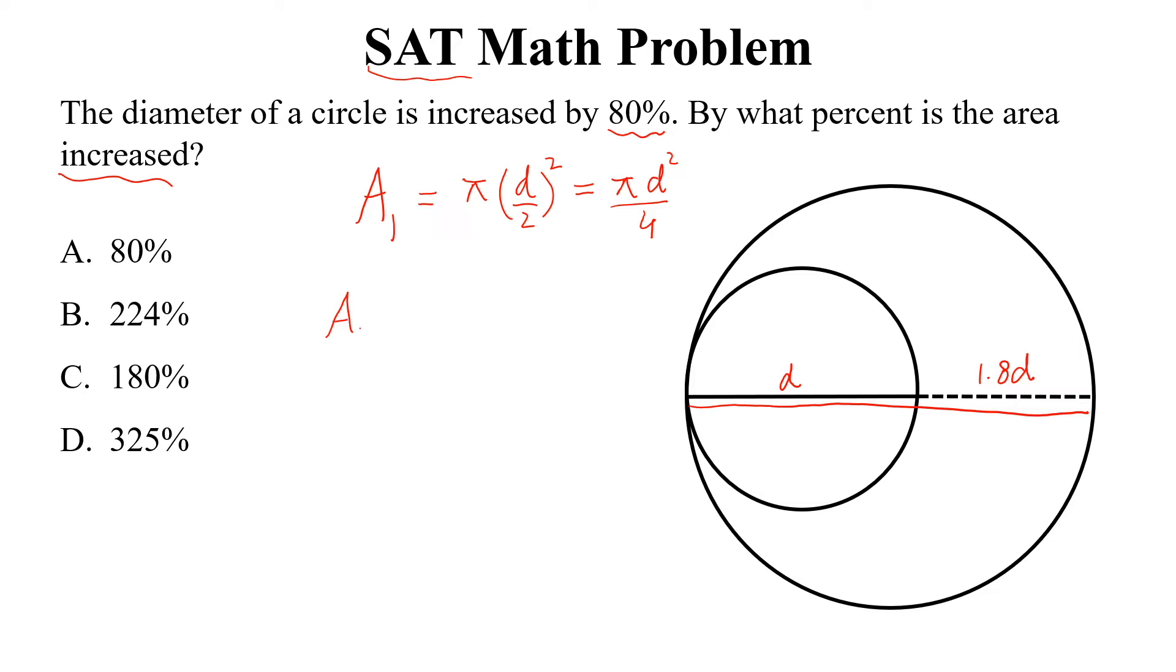Now, the area of the new circle will be equal to pi into 1.8d divided by 2 square. Simplifying, this is equal to 3.24 pi d square divided by 4, since 1.8 square is 3.24.